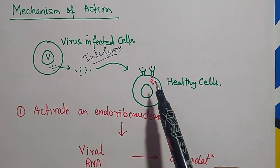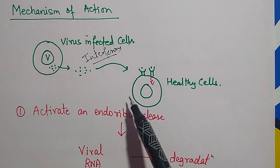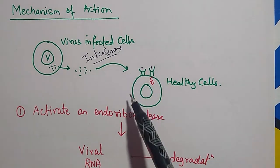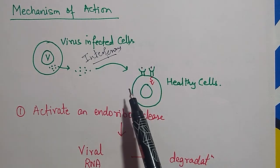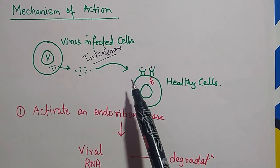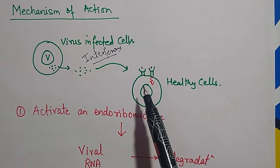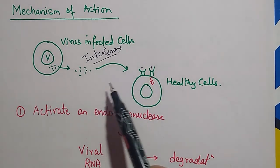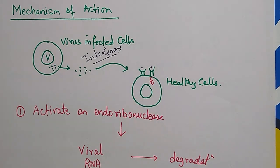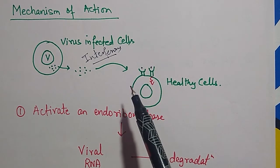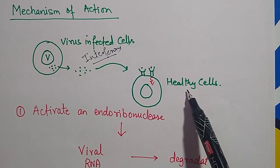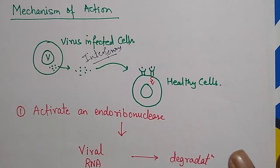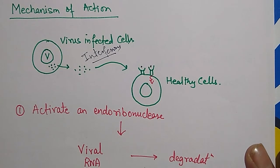The interferons go and bind to healthy cells in the nearby neighborhood. This kind of signaling is called paracrine signaling, because it happens in the immediate milieu — binding to neighboring healthy cells is called paracrine signaling.